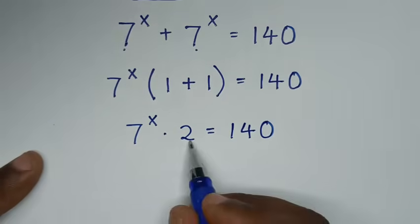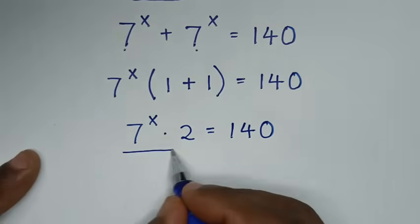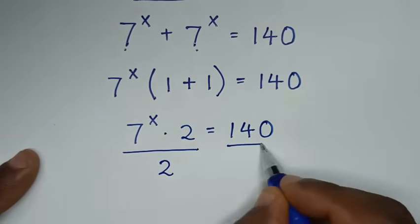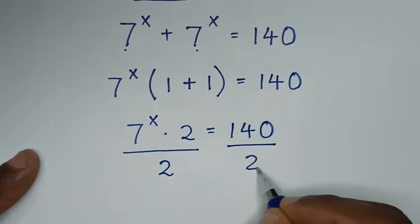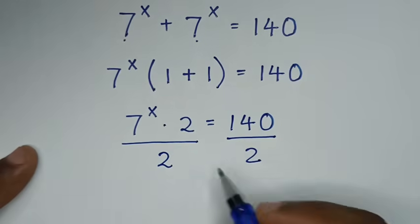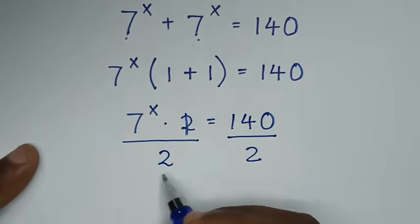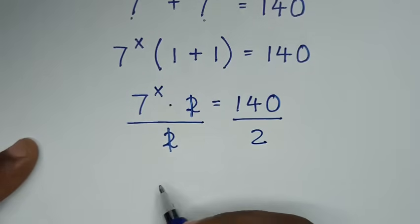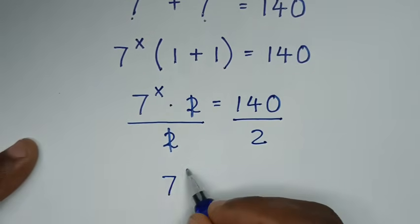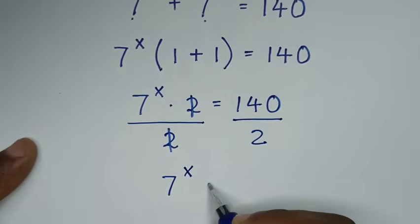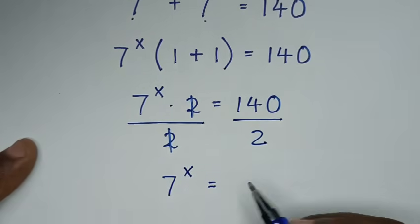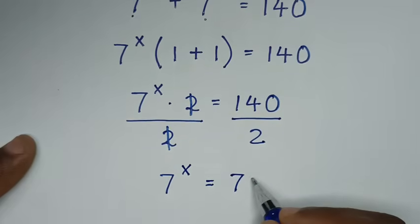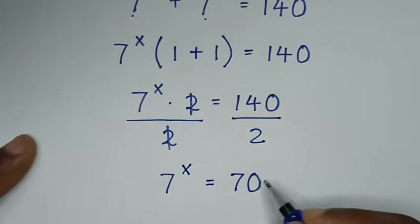Then we'll divide by 2 on both sides, so here and here we'll divide by 2. This and this will cancel, then it will be 7 power of x is equal to 140 divided by 2, which is 70.